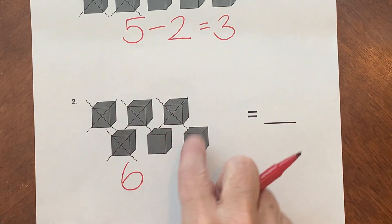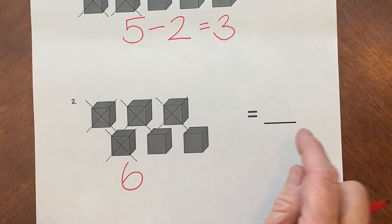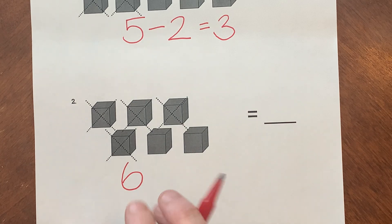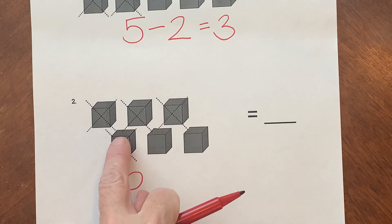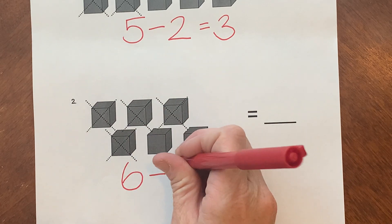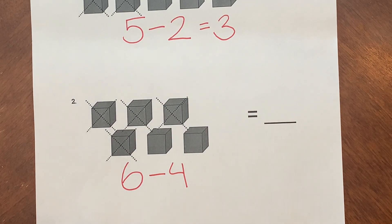Okay, so we have six blocks and how many do they take away? Remember the X's show the takeaway. So let's count them. 1, 2, 3, 4. So I'm going to write subtract four or take away four or minus four.